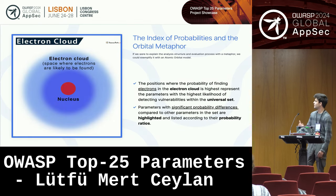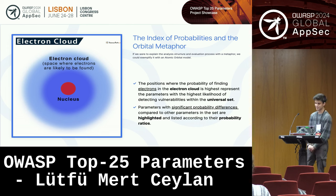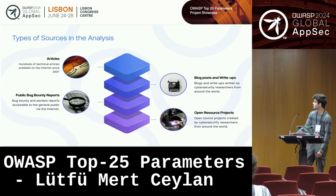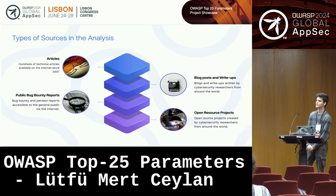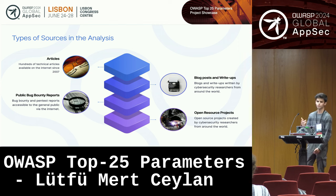We can exemplify this project like an atomic orbital model. The positions where the probability of finding electrons in the electron cloud is highest represent the parameters with the highest likelihood of detecting vulnerabilities within websites. For example, the types of research include articles — since 2007 I couldn't find all of the articles on the internet, but I'm trying my best. The different side of this project is that I collected most of the data manually.